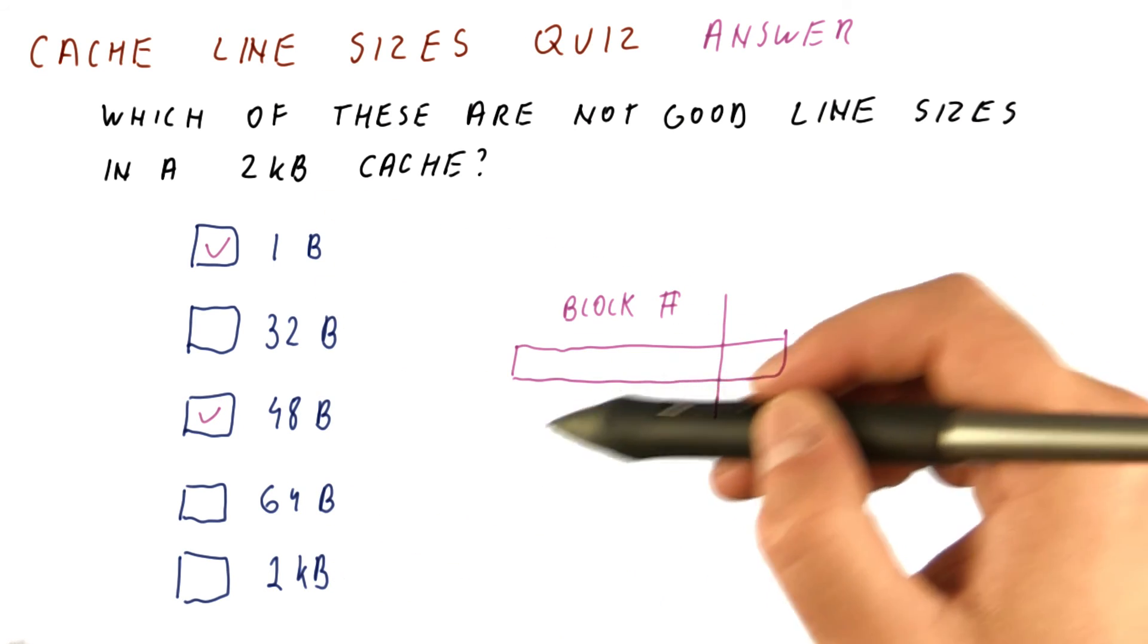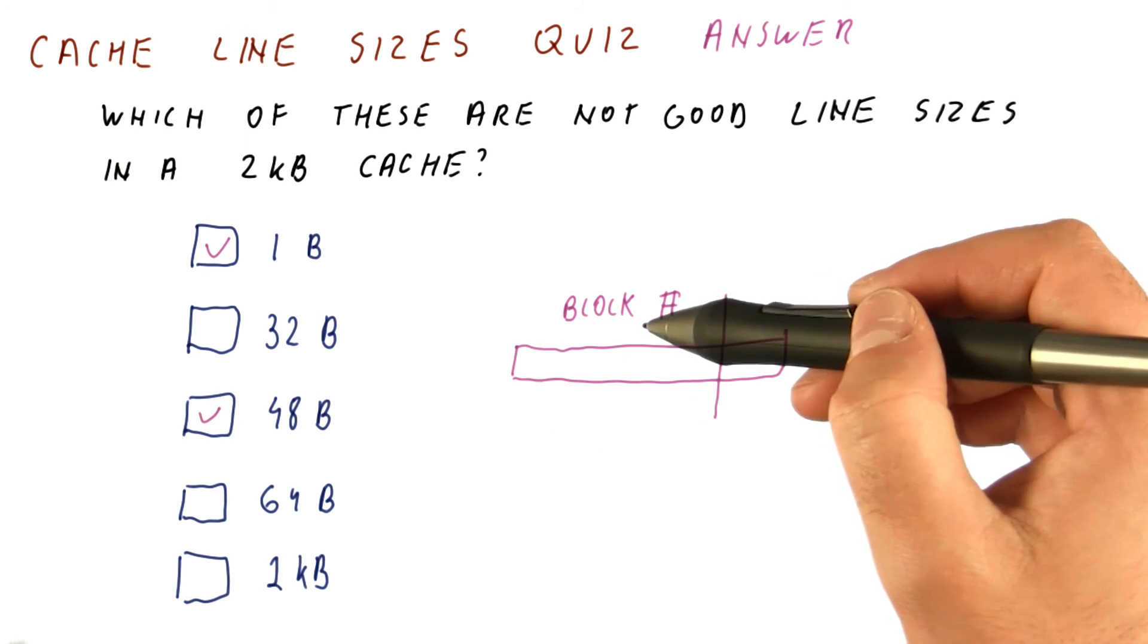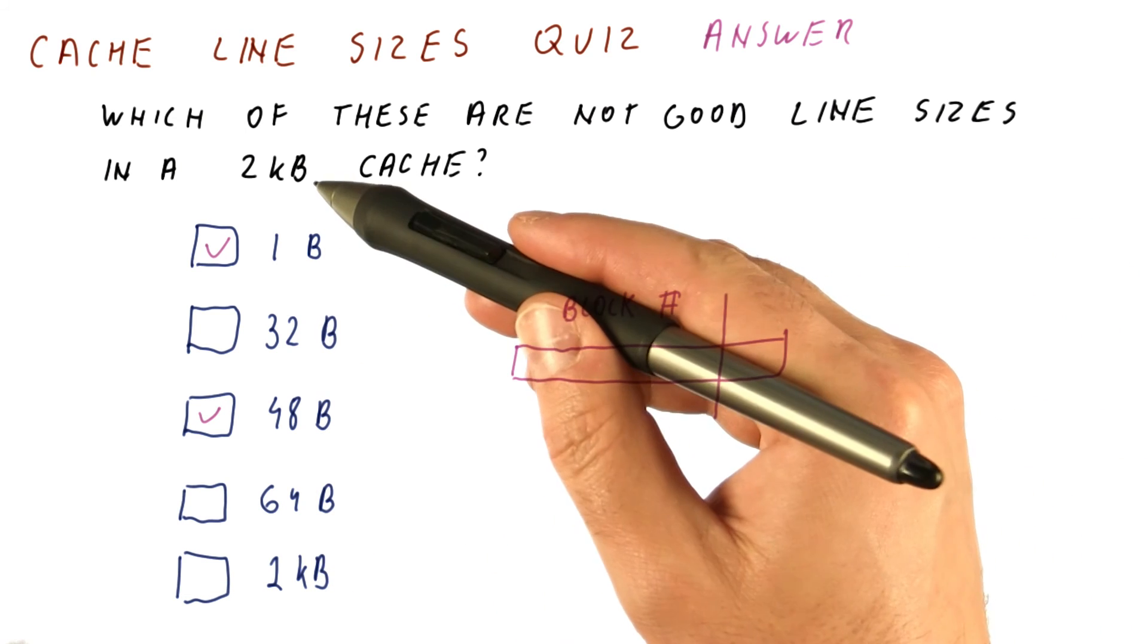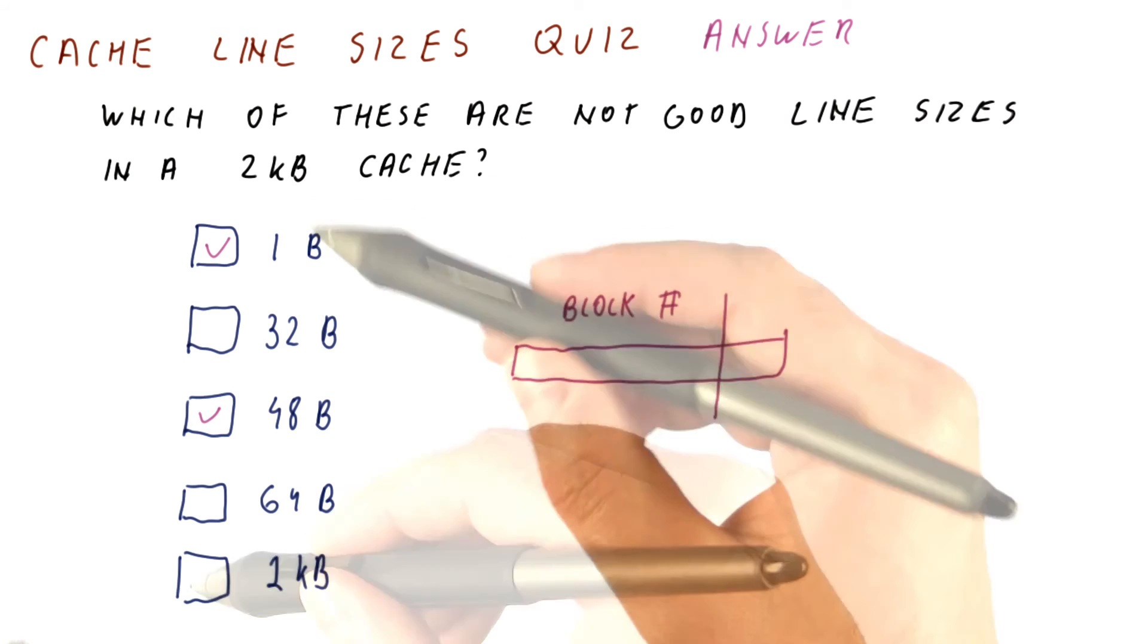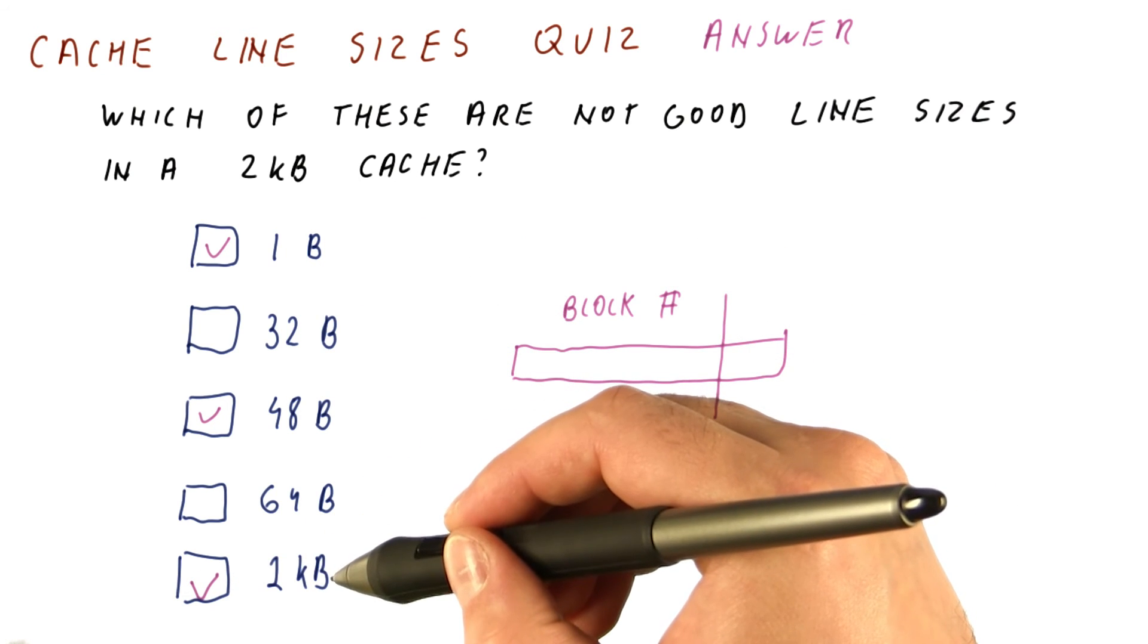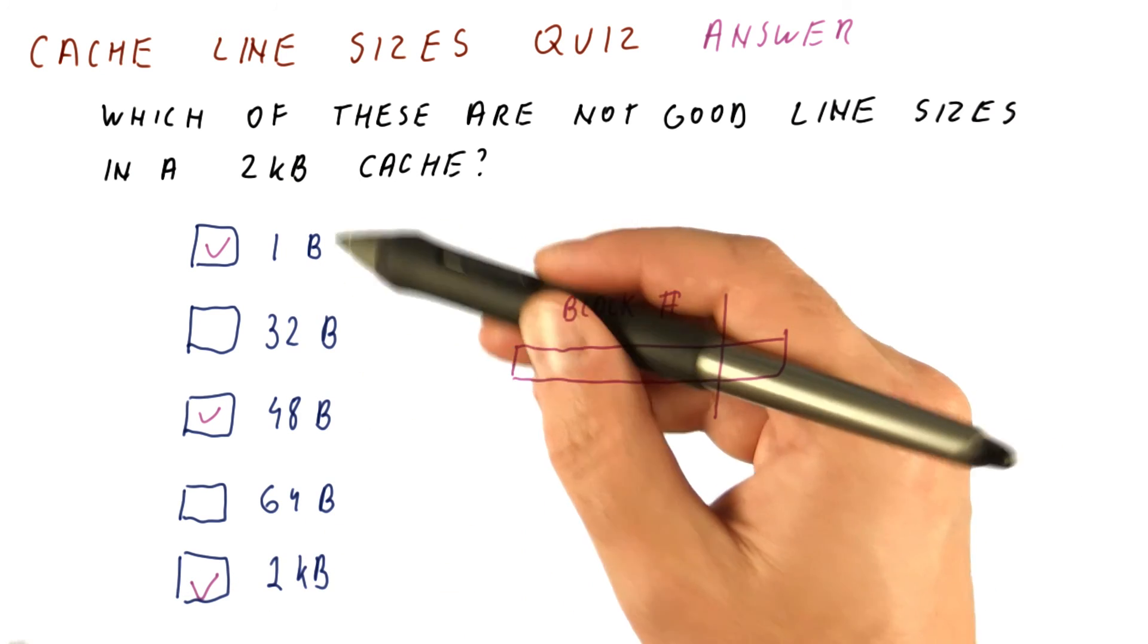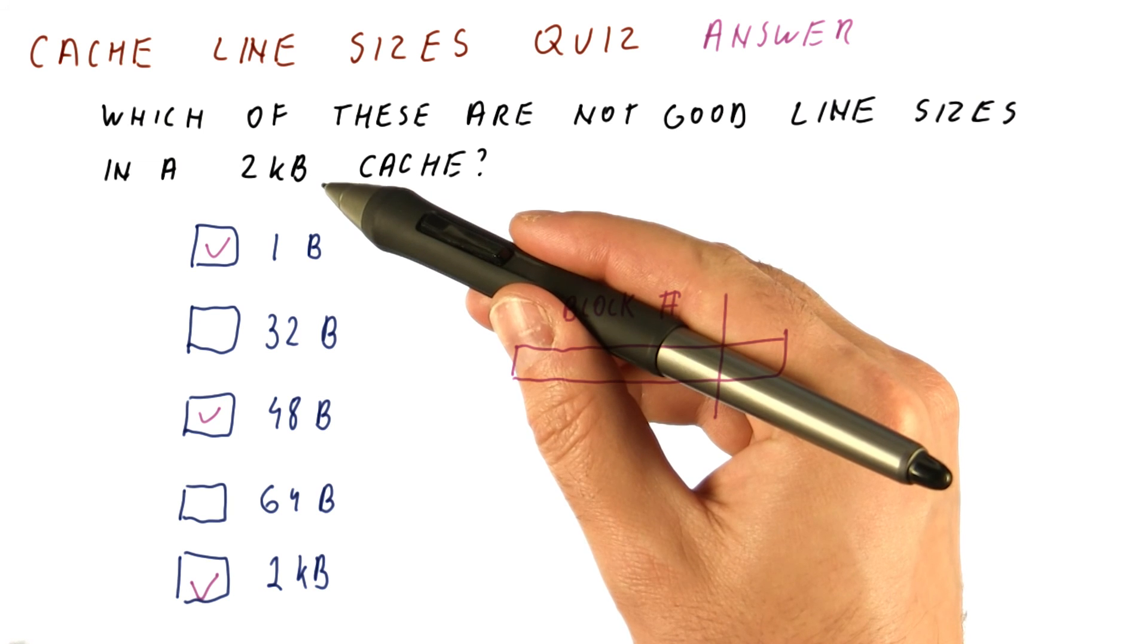One kilobyte is good because it's a power of two, but only two of them fit in a two kilobyte cache. So this is not a good line size because it is too large, given that the cache is only two kilobytes in size.